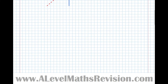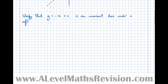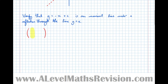Let's look at that in more depth. Say the question was: verify that y equals minus x plus c is an invariant line under a reflection through the line y equals x. Answering this requires you to know the matrix that represents a reflection through y equals x. We swap the x and y coordinates, so the matrix becomes: top row zero one, bottom row one zero. That's our reflection matrix.